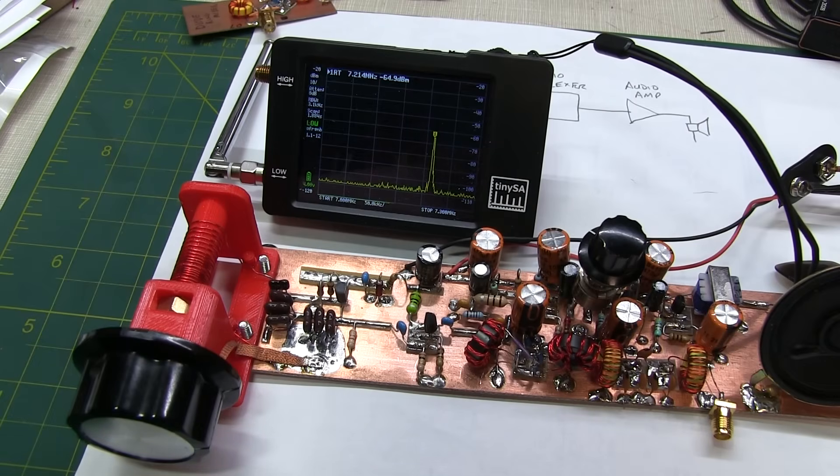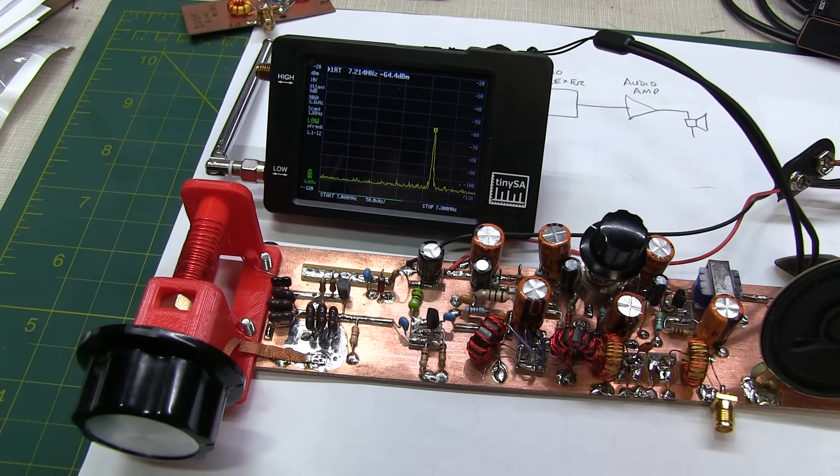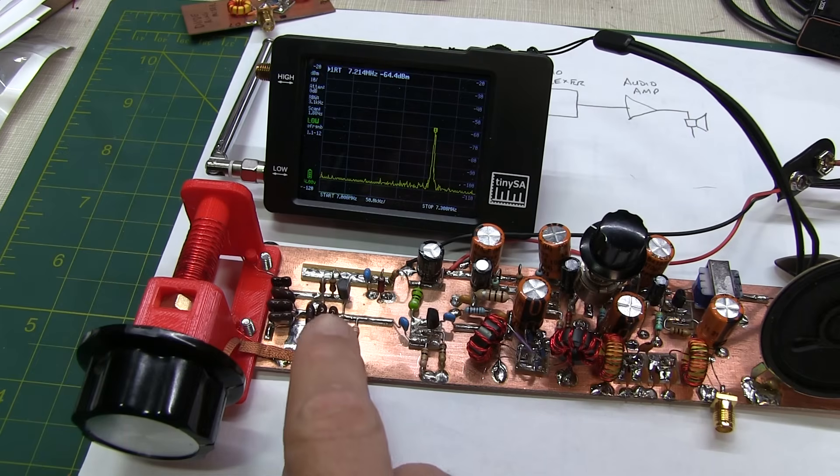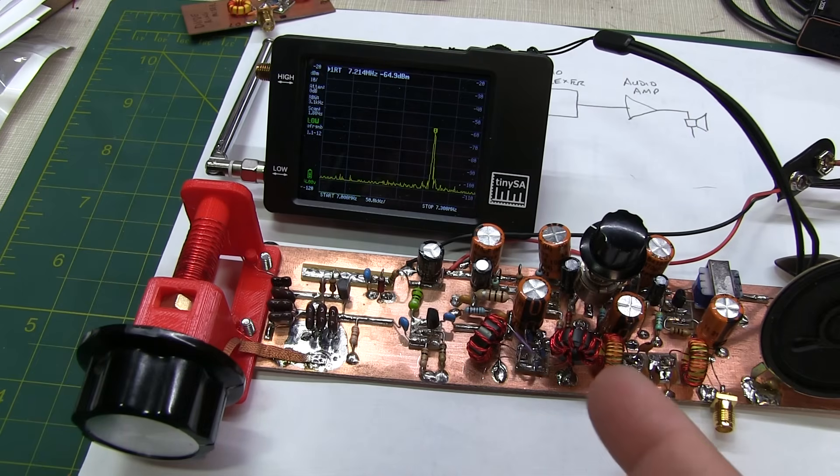Now one question that might come up is, well, how do you tell what frequency you're tuning to if you don't have all your test equipment around by you? And the answer is, well, that could be tricky. But because it is a direct conversion receiver, the oscillation frequency of the VFO is the frequency you're effectively tuned to. And because it's a relatively high level injection into the mixer, there's enough energy to be able to be picked up by an external receiver or even something like this little tiny SA.